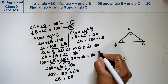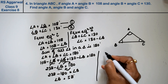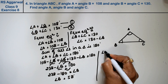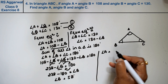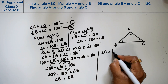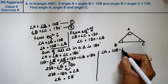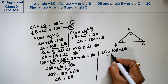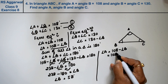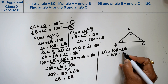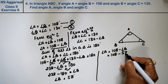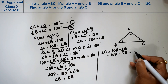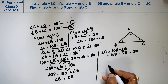Now let's find angle A. Angle A equals 108 minus angle B, so angle A equals 108 minus 58, which equals 50 degrees.